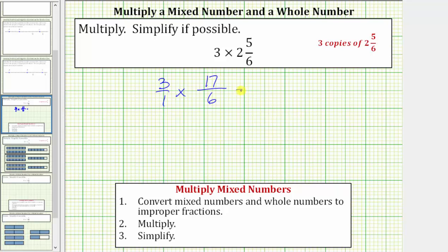Next we multiply the numerators and denominators. The numerator is 3 times 17. The denominator is 1 times 6. Before we determine these products though, we will simplify out any common factors between the numerator and denominator. Notice 3 and 6 share a common factor of 3. There's one 3 in 3 and two 3s in 6.